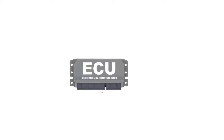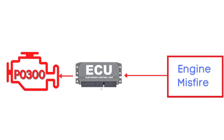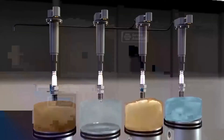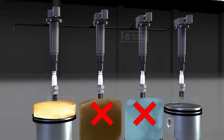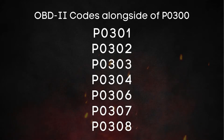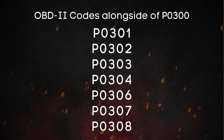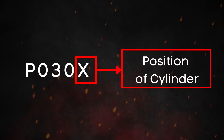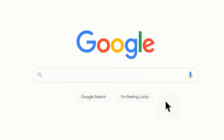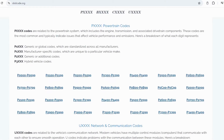First things first, let's break down what the P0300 code actually is. This code gets triggered when the engine control module, or ECM, detects an engine misfire that's either random or showing up on multiple cylinders. A misfire means that the combustion process inside one or more cylinders isn't happening properly. You may also find another OBD-II code like P0301 to P0308 alongside P0300. The last number in these accompanying codes refers to the affected cylinder. If you want to know more about what these codes mean, visit our website obdcode.org for a detailed explanation.